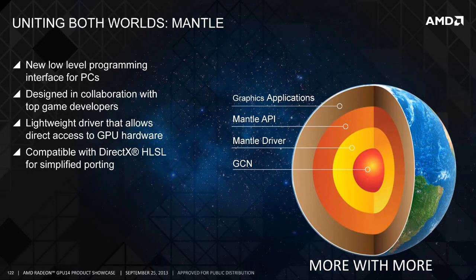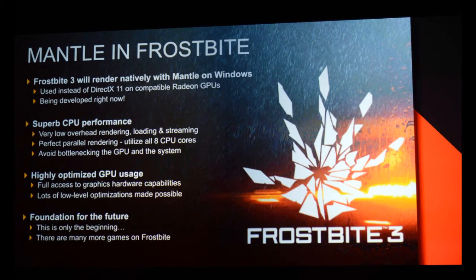What makes Mantle incredibly important and promising is that both the Xbox One and the PS4 are both based on AMD technology that uses Graphics Core Next. Mantle will allow console developers much more flexibility over the years in squeezing every bit of performance out of those consoles' hardware, something high-level APIs don't offer. Mantle, in effect, is Xbox One's low-level API brought to the PC.